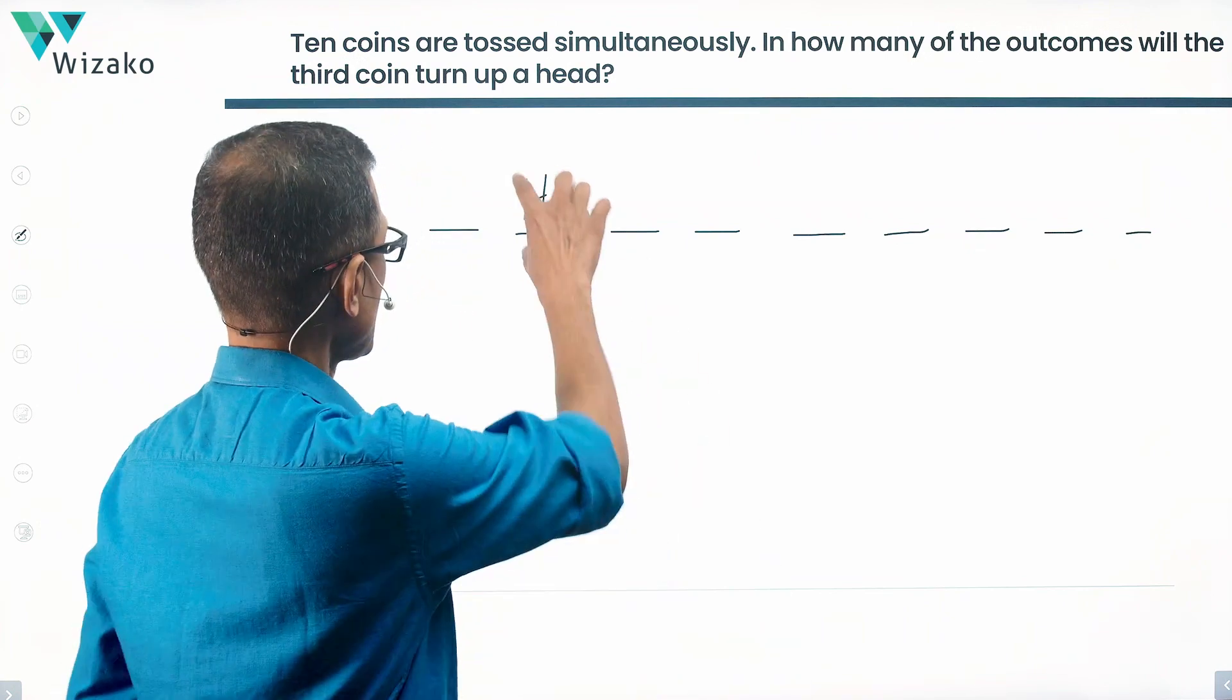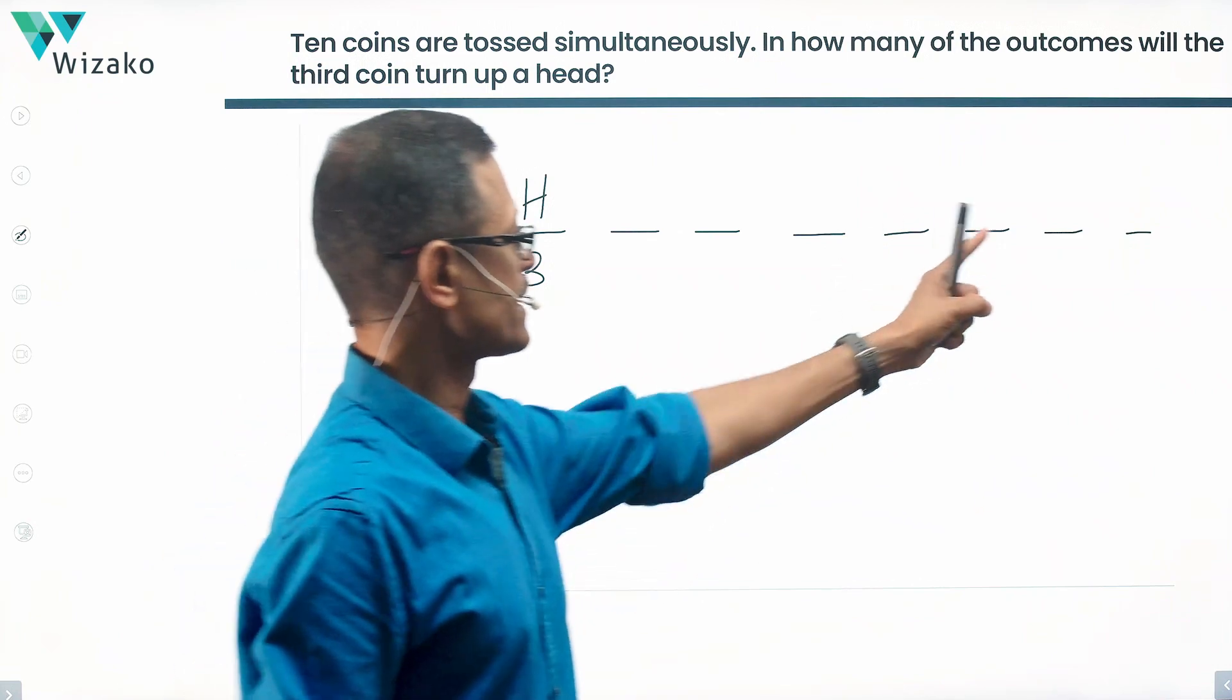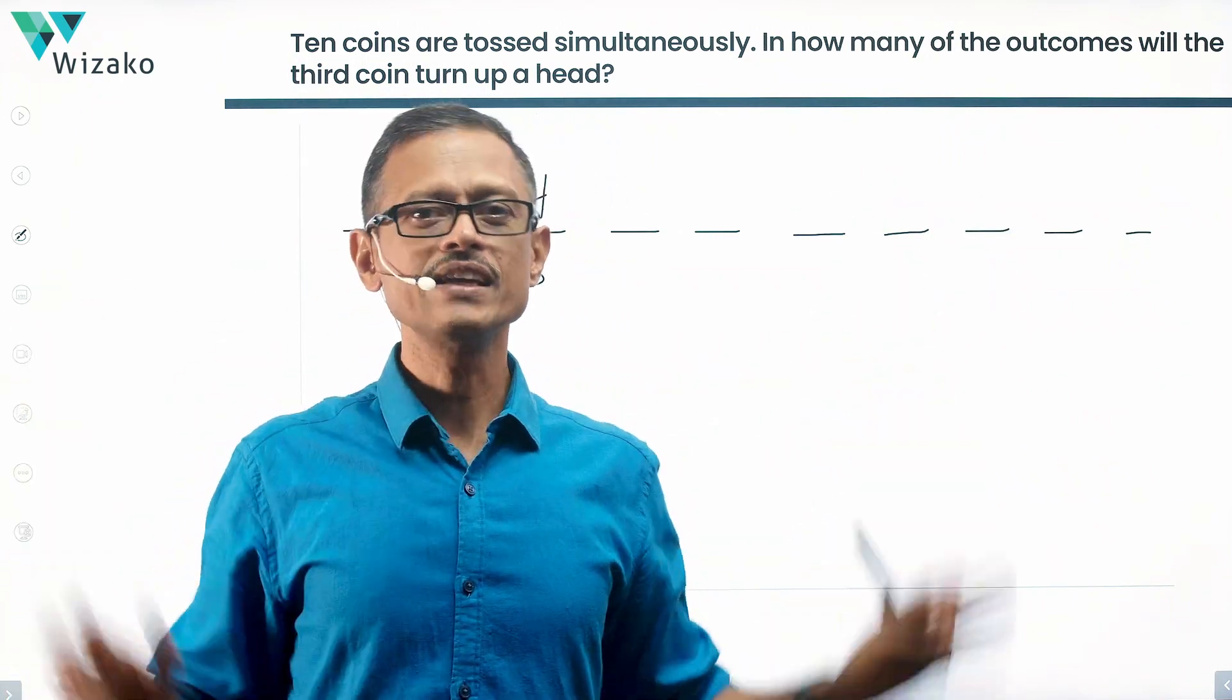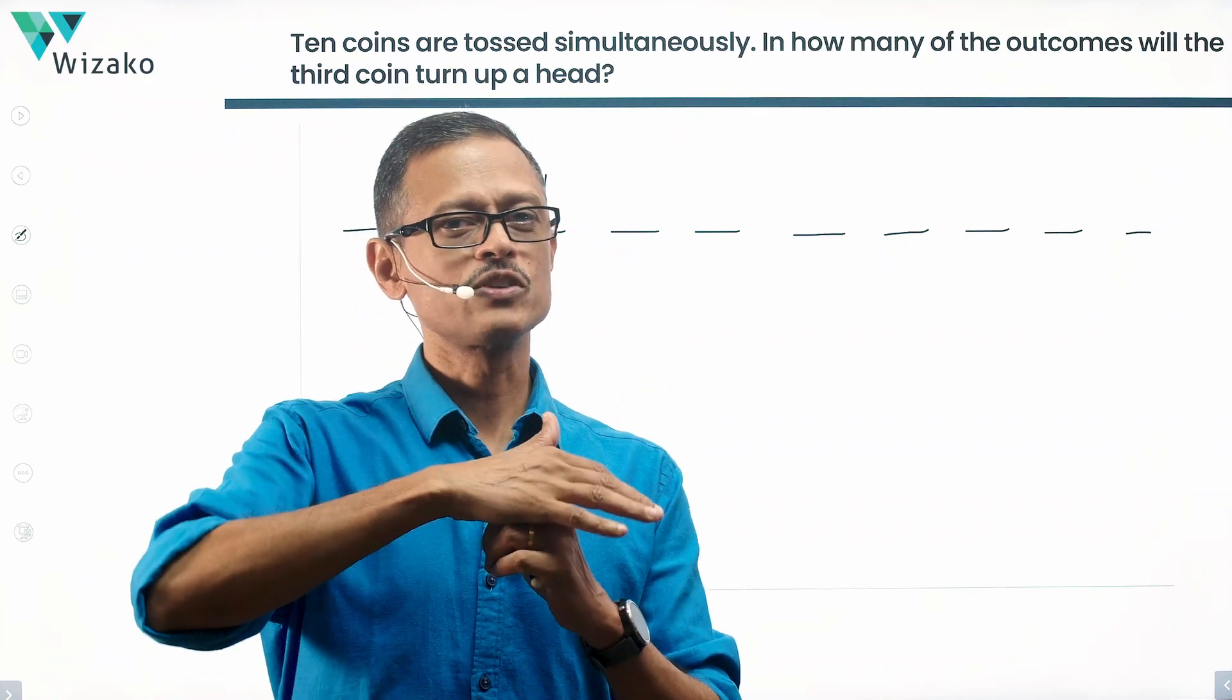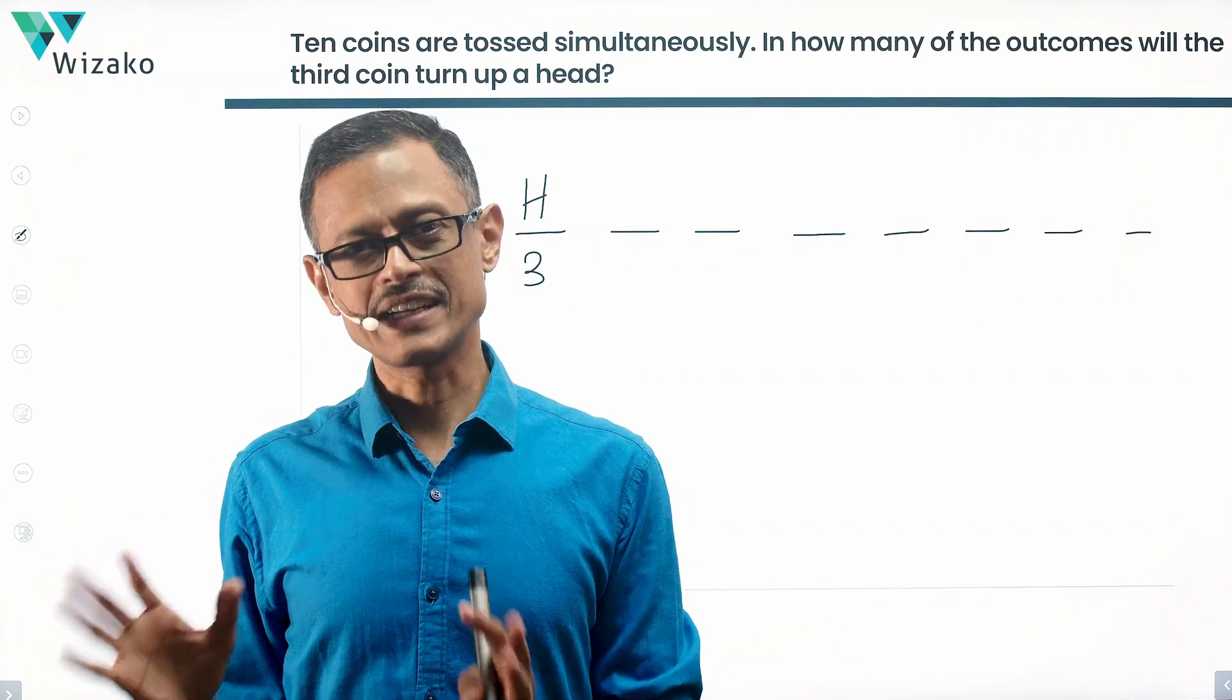For them, this has to be a head. That's all that they're interested in. Can the fourth also be a head? Yes. Can the ninth be a head? Yes. Can the first be a tail? Yes. They're absolutely agnostic about what happens to the other nine.